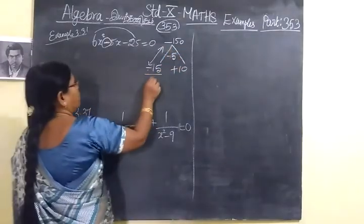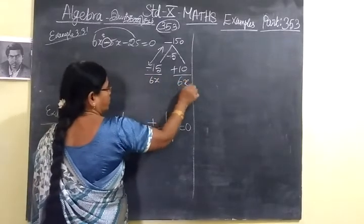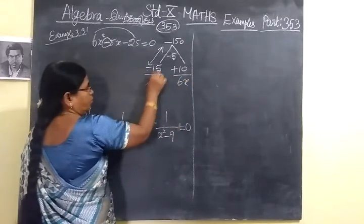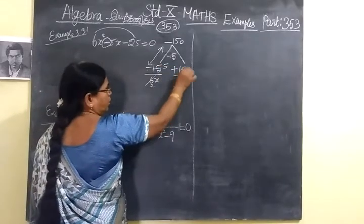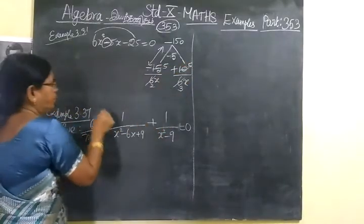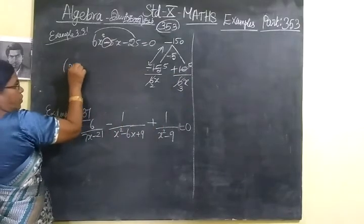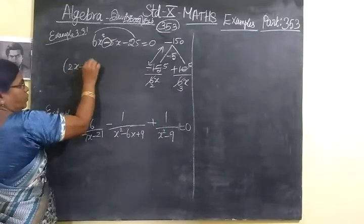Then write 5, 6x. Here also 6x. Take 3 tables 2 times, then 5 times. Here you take 2 tables 3 times, then 5 times. So the factors are 2x - 5, then 3x + 5 = 0.